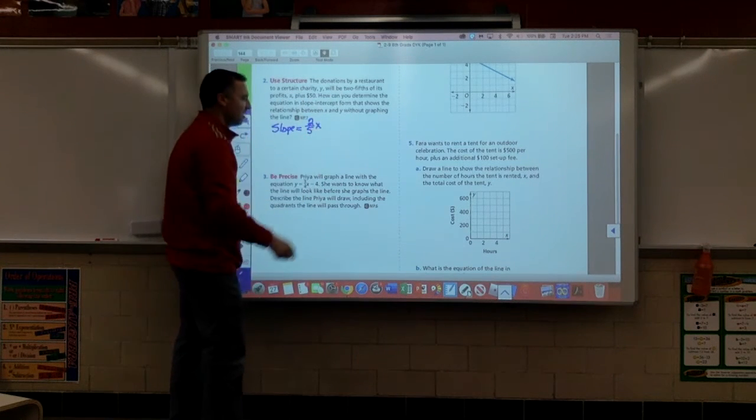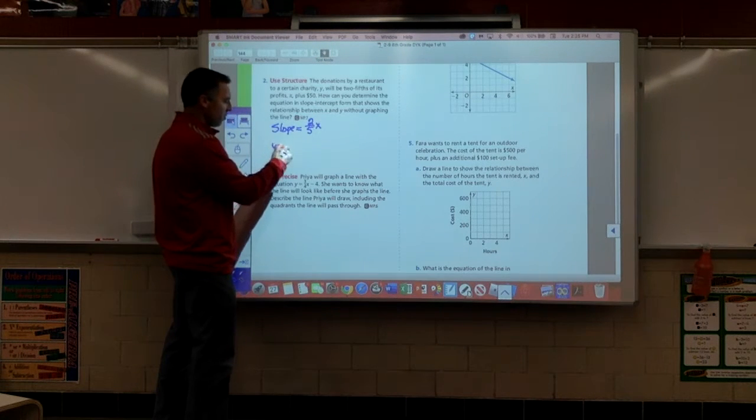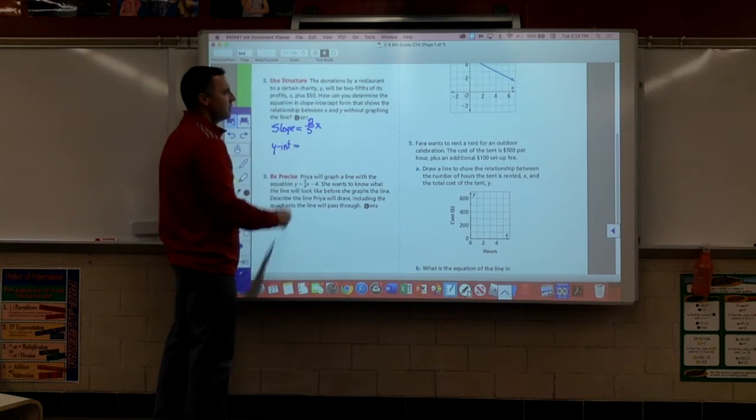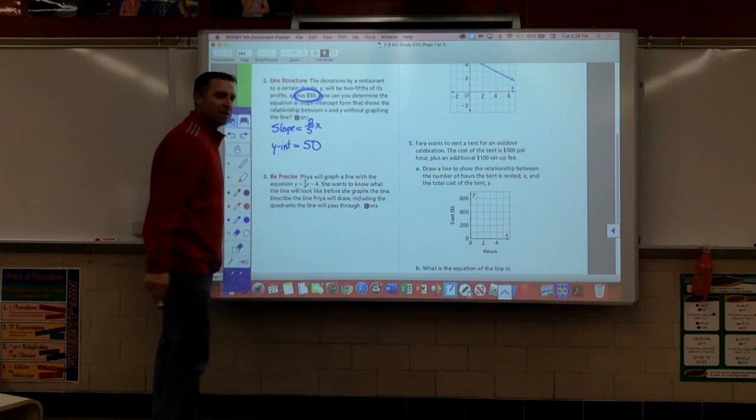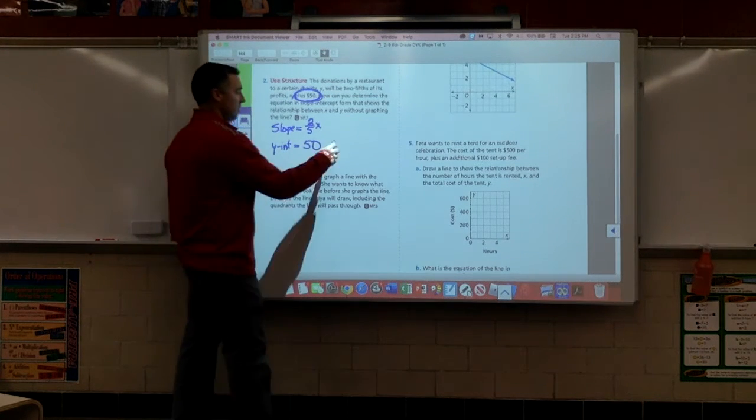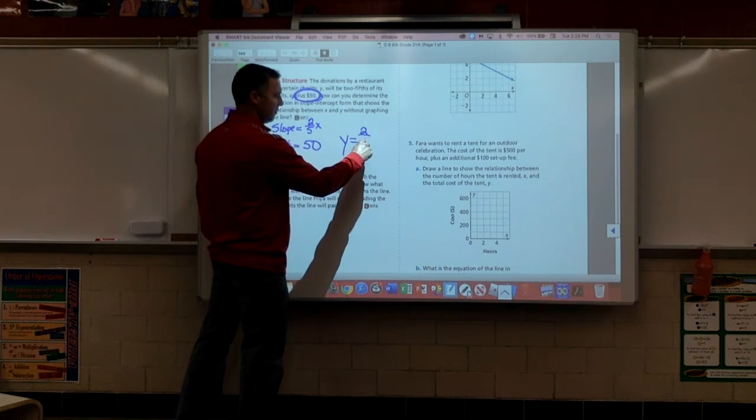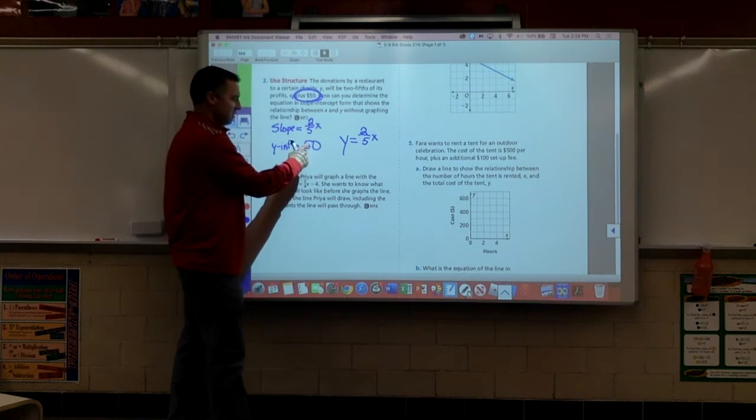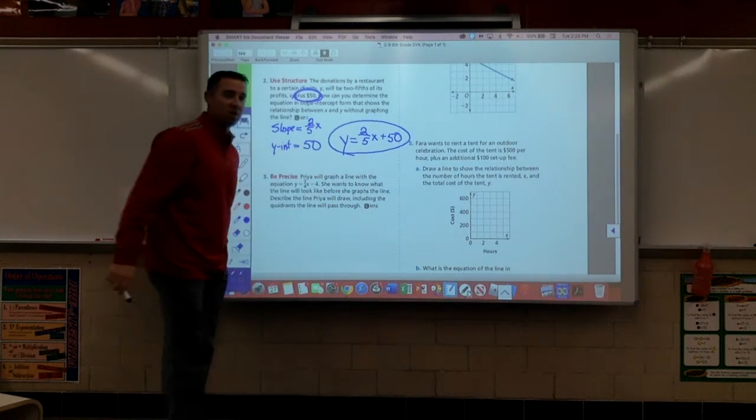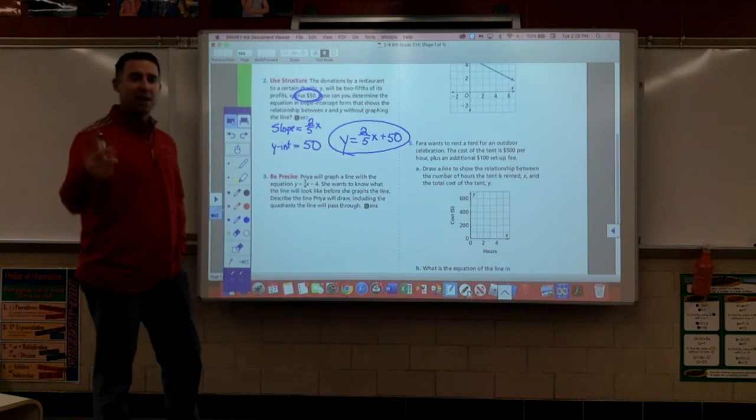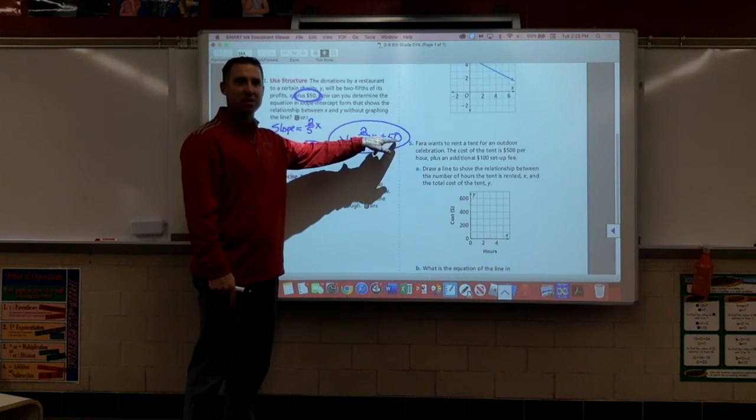Now, they say profits is going to be the letter x. Does it give us our starting point or what we're calling the y-intercept? Yes. We are starting off with 50 bucks. So, write the equation. Y equals, put the slope here, two-fifths times x, and then we've got to add on our 50 bucks. We just wrote the equation of that non-proportional situation. Why is it non-proportional? Because it starts somewhere other than zero. It starts up there at 50.